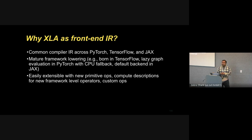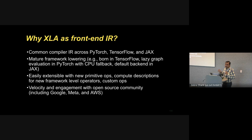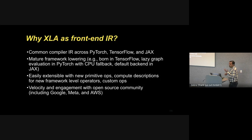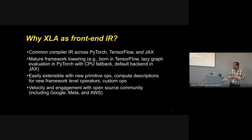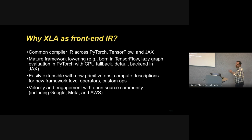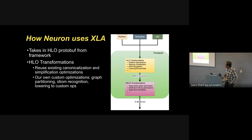XLA is easily extensible with new primitive ops and compute descriptions for new framework-level operators — and super importantly, custom ops, because ML scientists and compiler developers always want to do something beyond what is available ready-made in the frameworks. We also love the velocity and engagement with the open source community, working with Google, Meta, and others to use XLA for Neuron, enhance it, and contribute back.